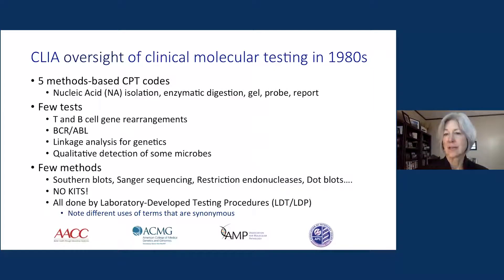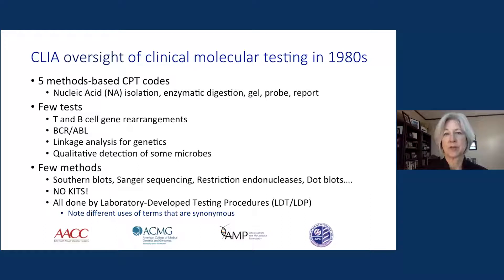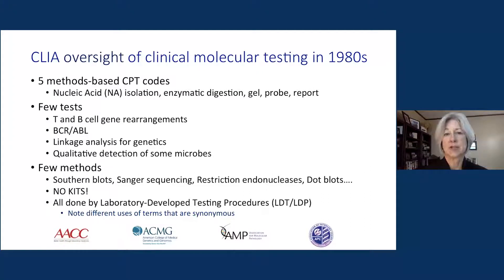Around 1987 or 1988, laboratories began to actually transition to more clinical activities and about this time we were issued the five original methods-based CPT codes for reimbursement, and that really launched this area of molecular pathology into the beginning of what we see today. These methods-based CPT codes allowed us to describe what we're doing in the laboratory — nucleic acid isolation, digestion, etc. — no matter what the assay was.